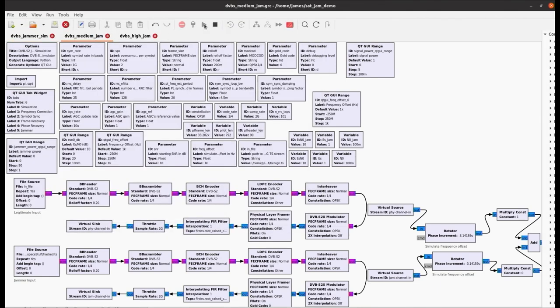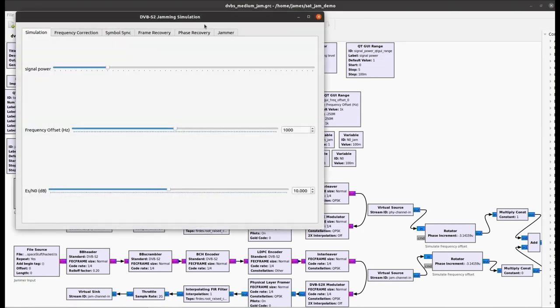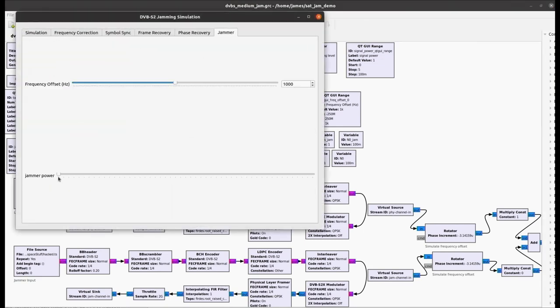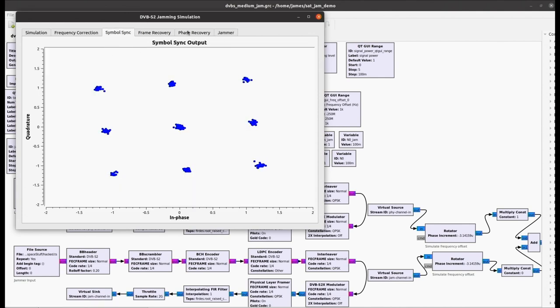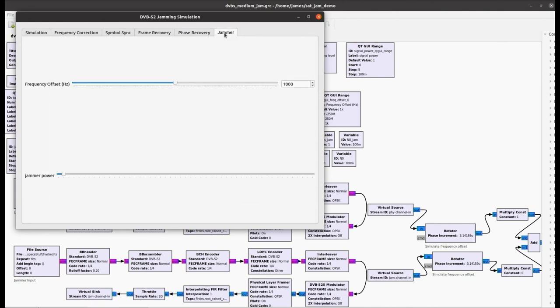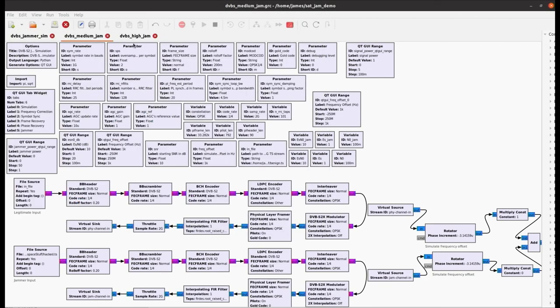Next, we'll go ahead and kick off a medium jamming scenario. So this is where the jammer and the transmitter will have equal levels of power. And if we look at the constellation, it will be that degraded, kind of meaningless constellation. And we would assume that the receiver is going to get no useful data out of it.